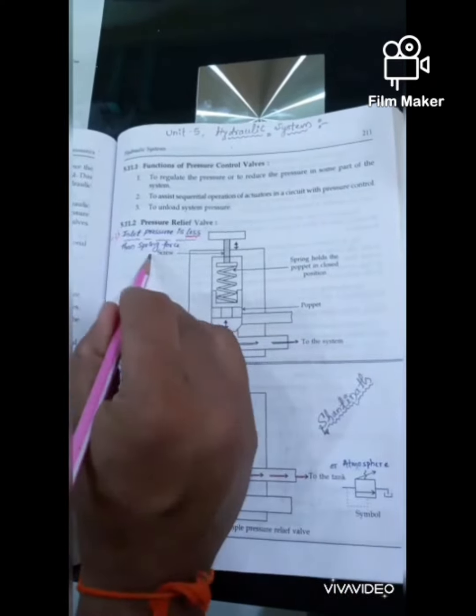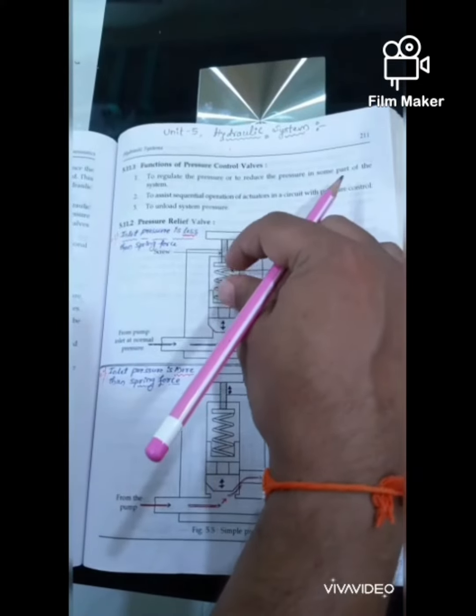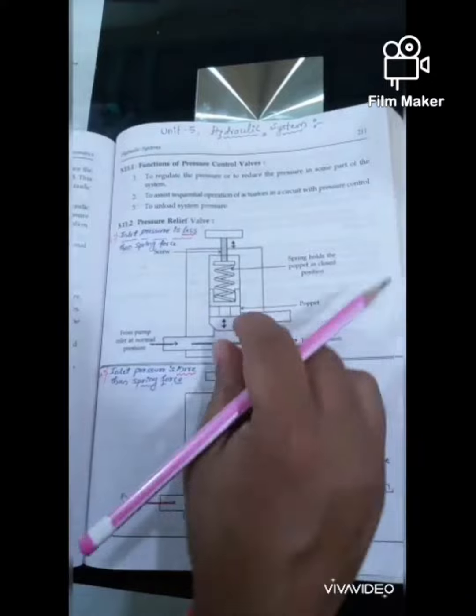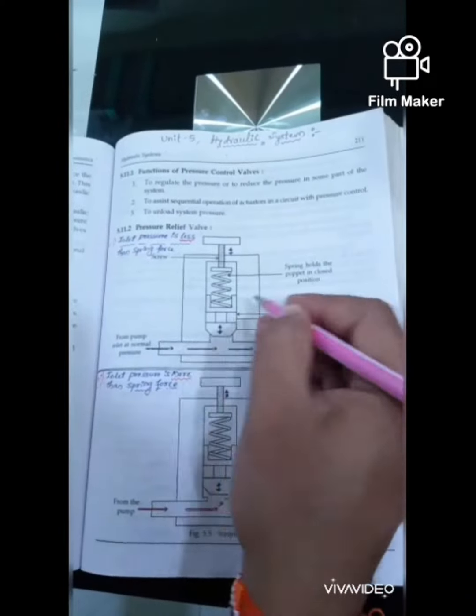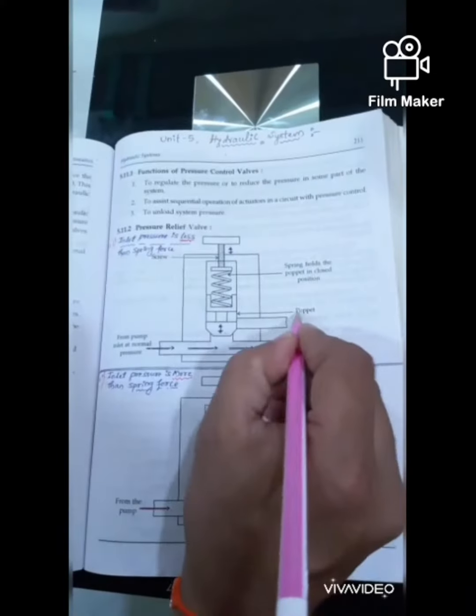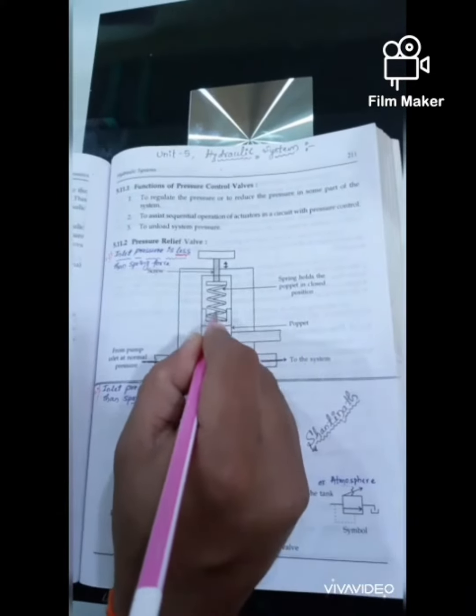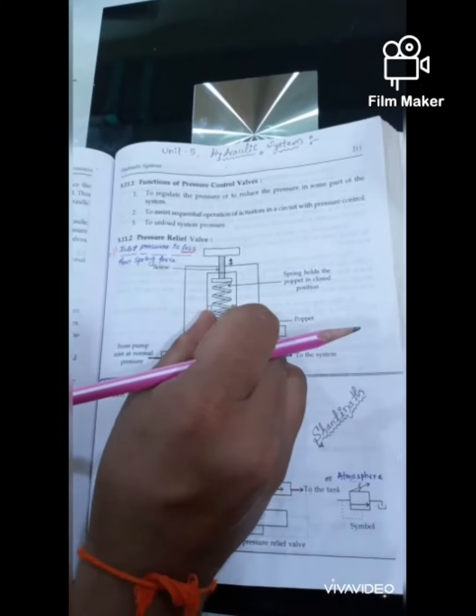Second point, the adjustable screw is provided to vary the spring force so that the valve can be opened and closed over a specified range of pressure. Third point is the puppet is attached to the spring and it is placed inside the valve body.